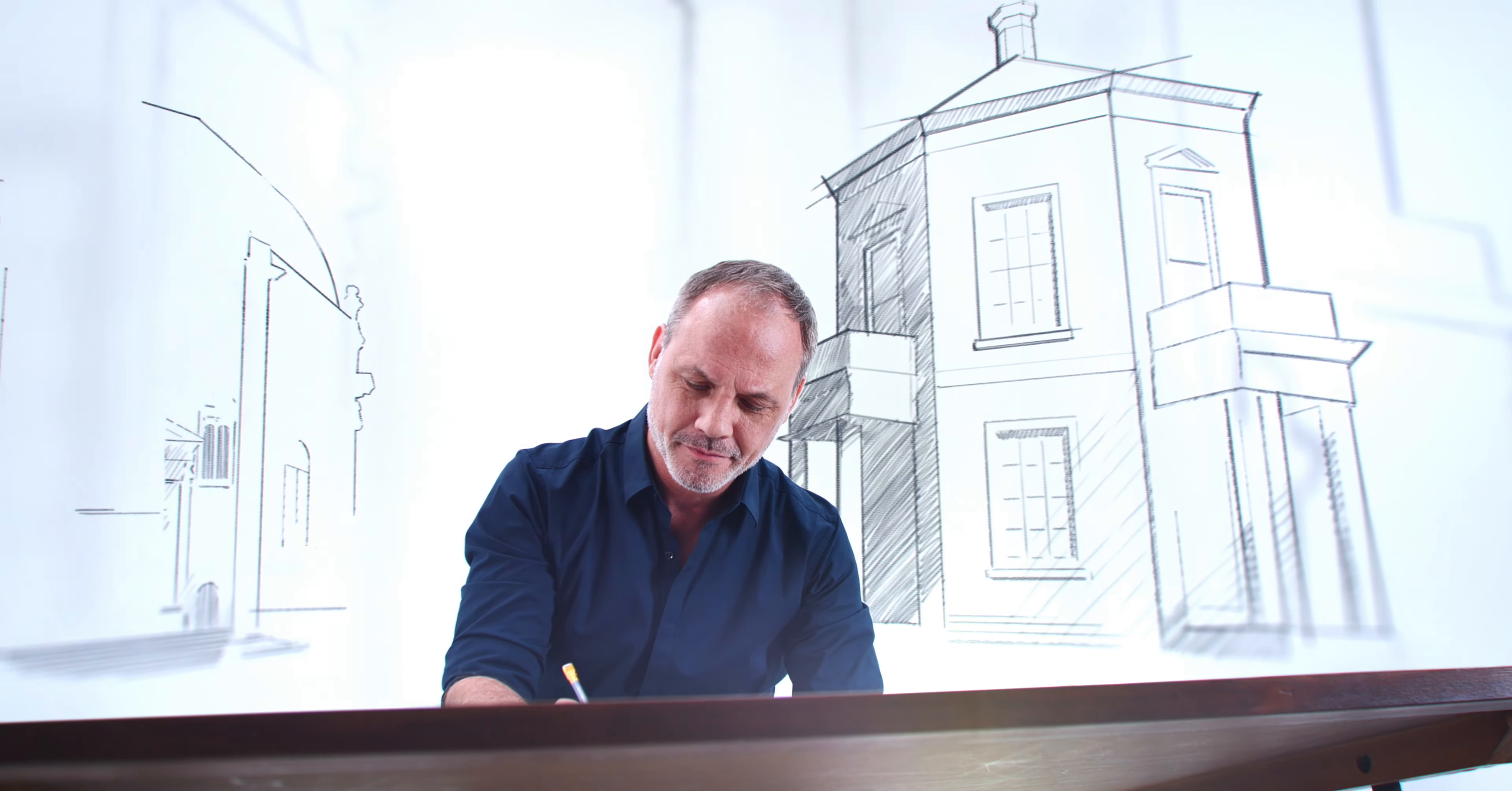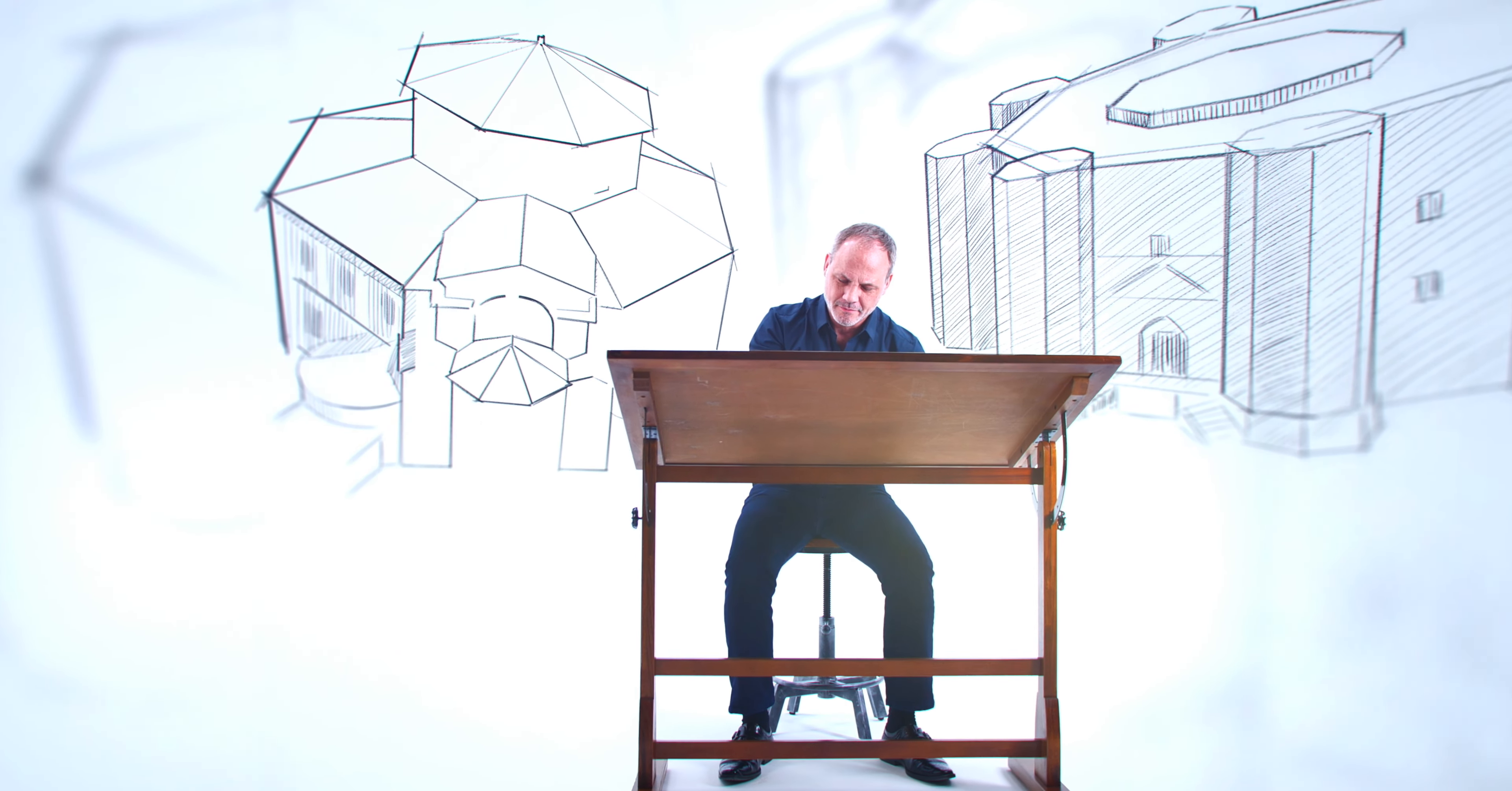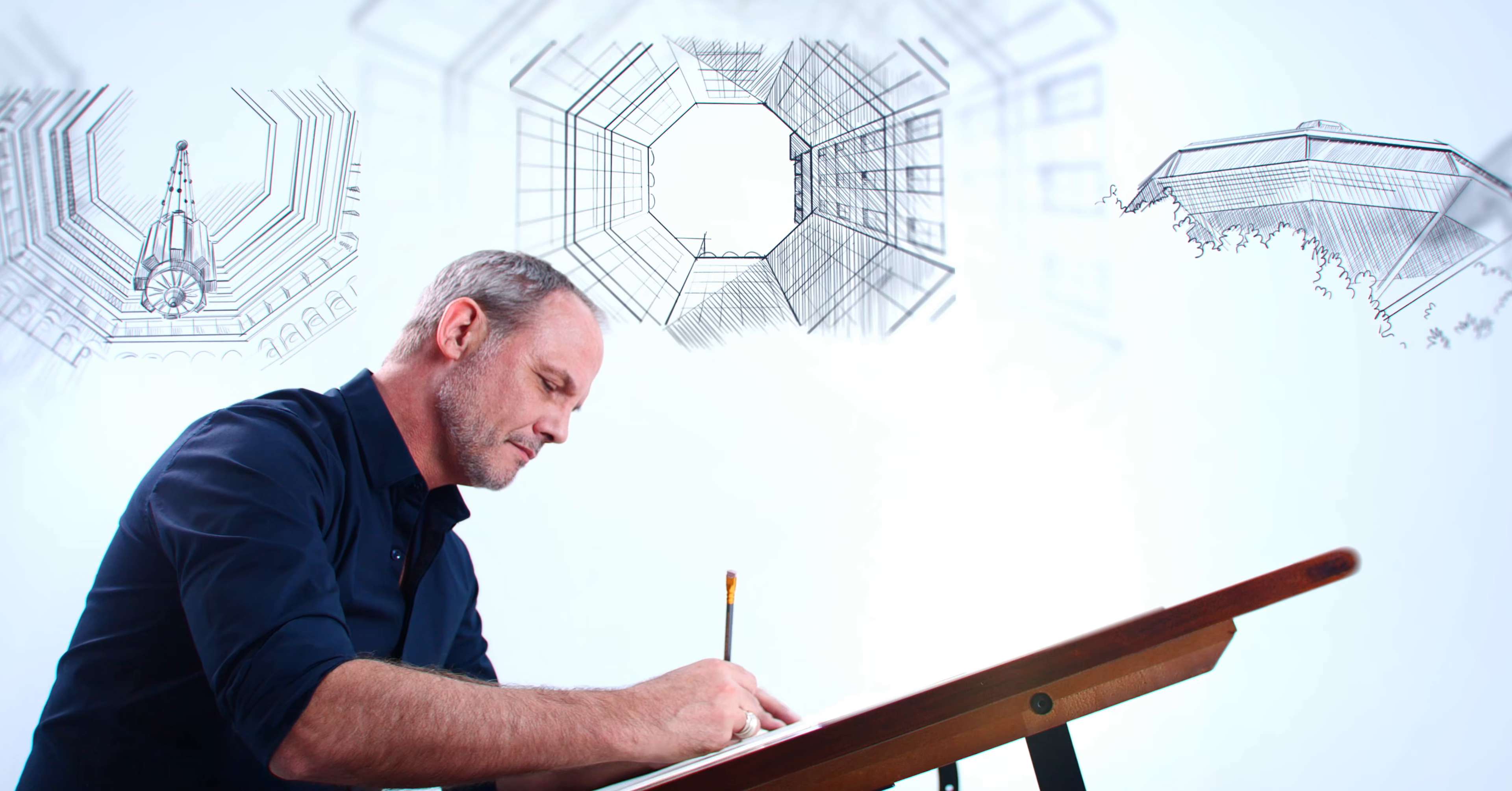Octagons have captured architectural imagination for centuries. The dynamic shape of the octagon has been used in castles, featured in domes of many churches and temples. In more modern times, the octagon has appeared in Art Deco, Bauhaus, and mid-century designs.